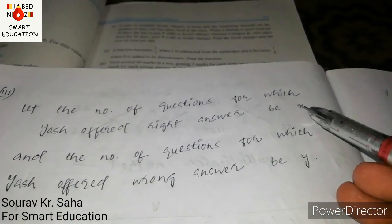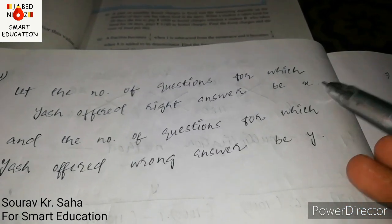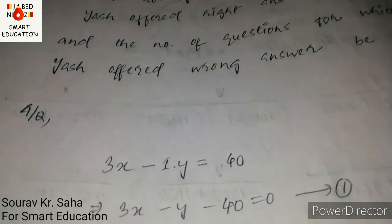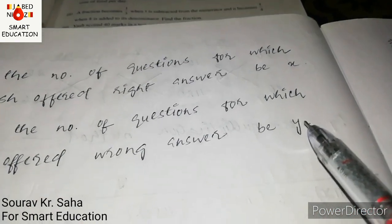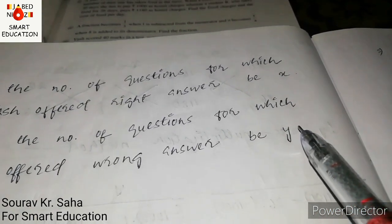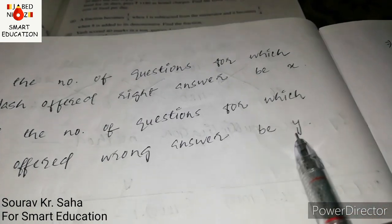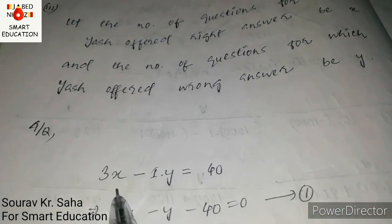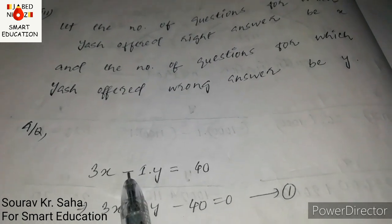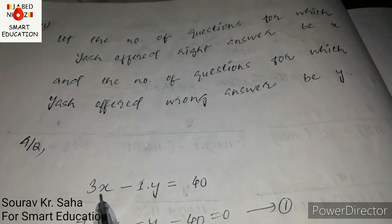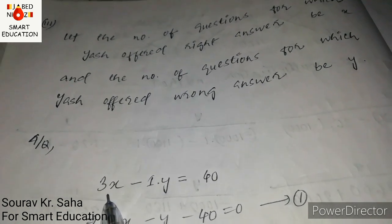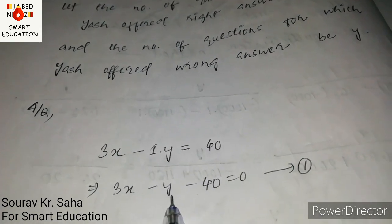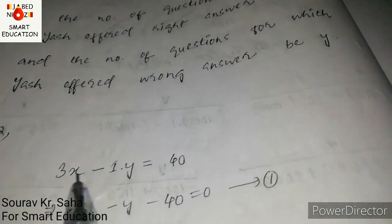For the first case: each correct answer gives 3 marks and each wrong answer loses 1 mark. So 3x minus 1y equals 40. Rearranging: 3x minus y minus 40 equal to 0. This is equation one.